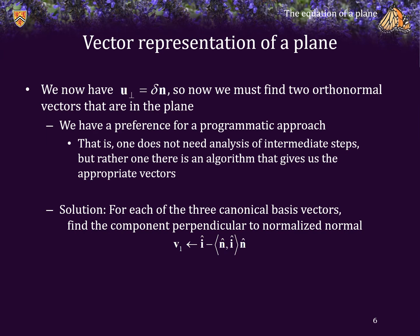So, V1 will be 1, 0, 0, subtract, having the projection onto the normalized normal being subtracted off of it.